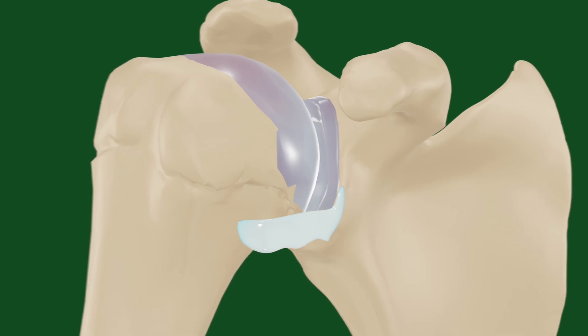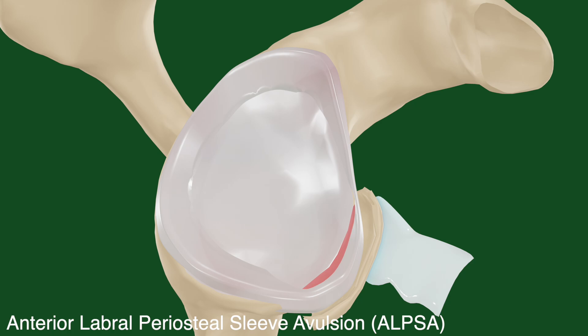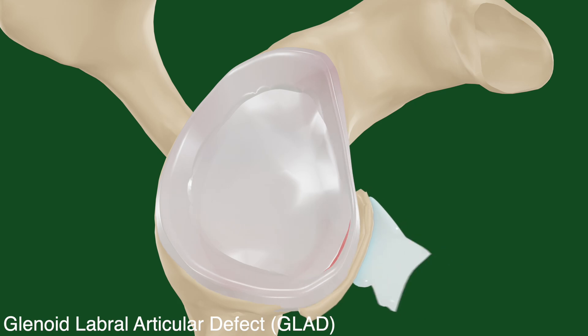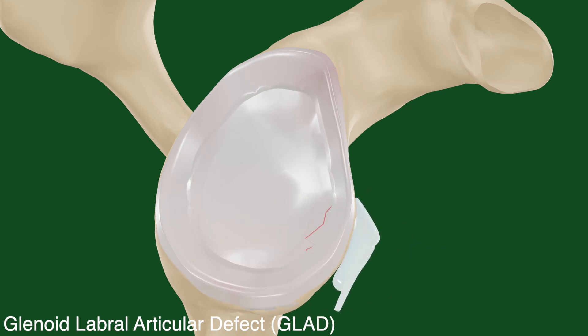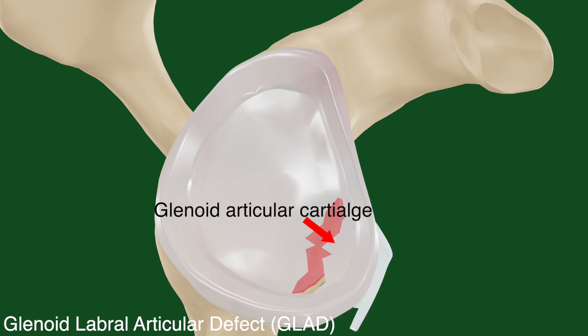Next, there is the ALPSA lesion — the anterior labral periosteal sleeve avulsion — where the periosteum of the anterior glenoid neck is also avulsed along with the inferior glenohumeral ligament and the labrum, which can cause the labrum to be sandwiched between the periosteum and the cortical bone underneath. The last soft tissue injury is a glenoid labral articular defect, also known as a GLAD lesion, where a portion of the articular cartilage of the glenoid is also avulsed along with the labrum.